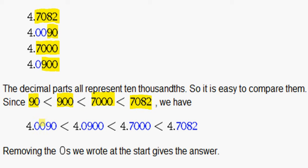Then we can use those numbers to write out the full number. So we will use our 90 and go back and it's 4.0090. So we write that first because it is the smallest.